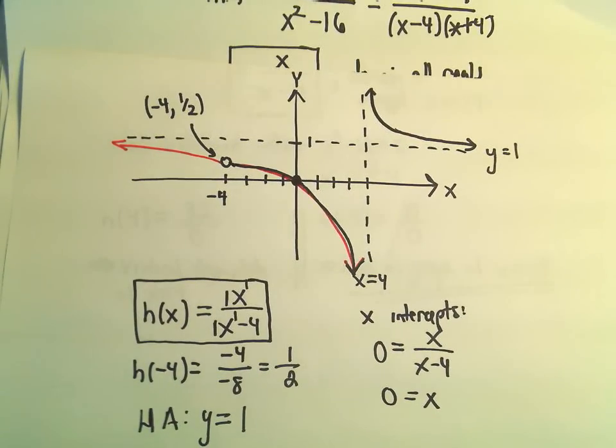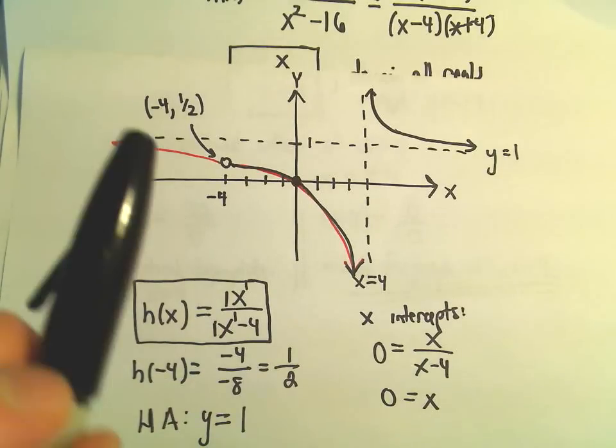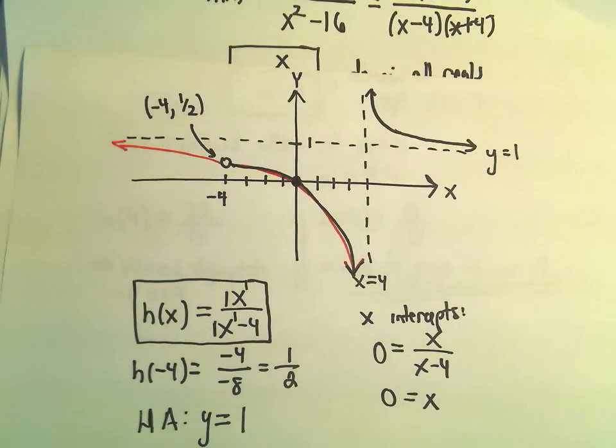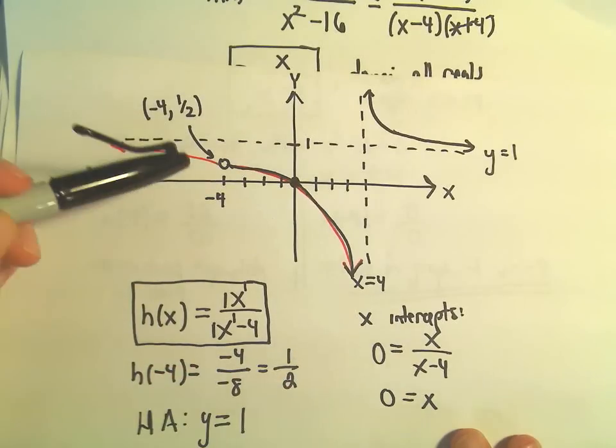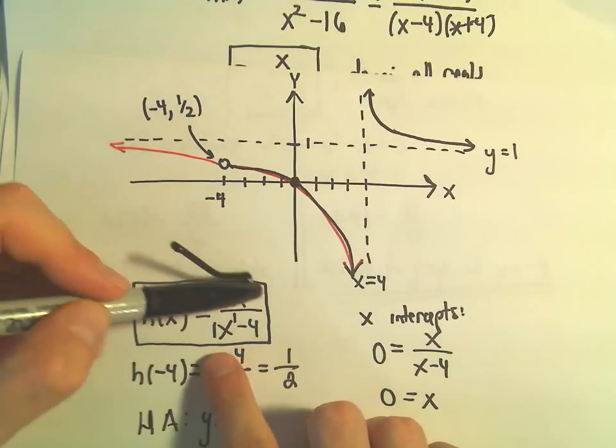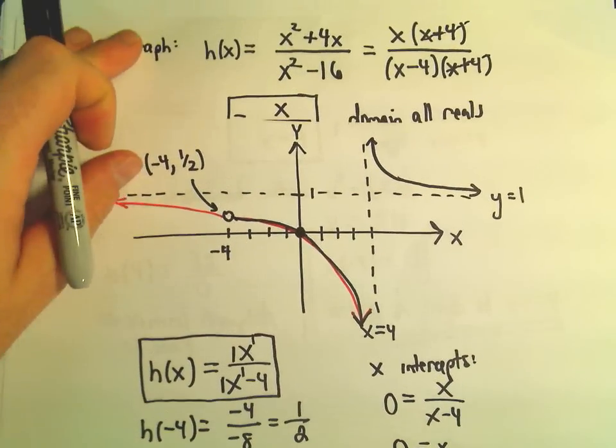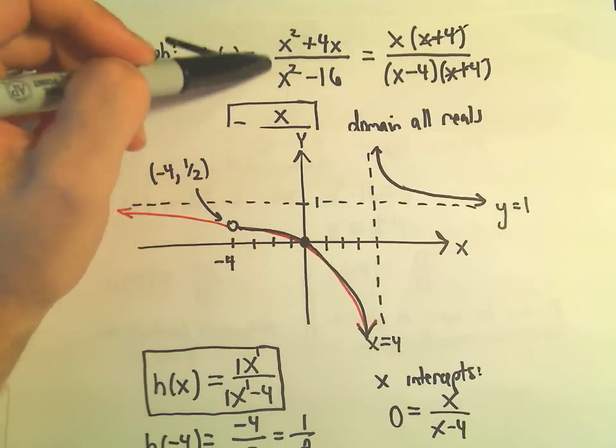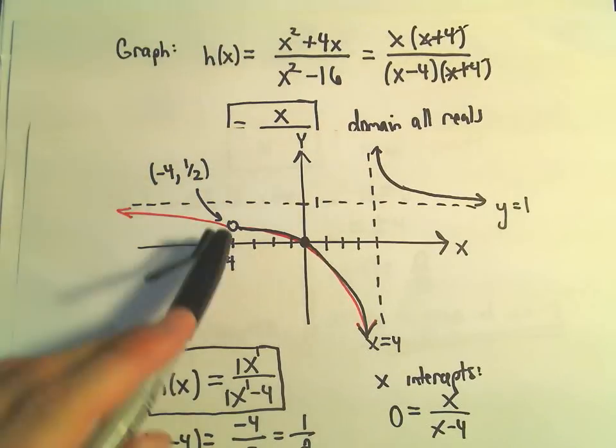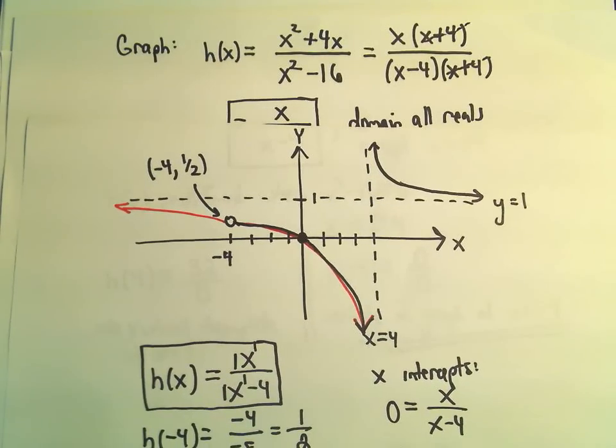And now I've got a basic graph. So it looks like x over x minus 4. We've got our vertical asymptote at positive 4. And even though negative 4 is okay in this simplified formula, we have to take into account the very original that it came from. And that one, negative 4 makes it undefined. We get 0 over 0. So that's why we put our hole in the graph at that point.